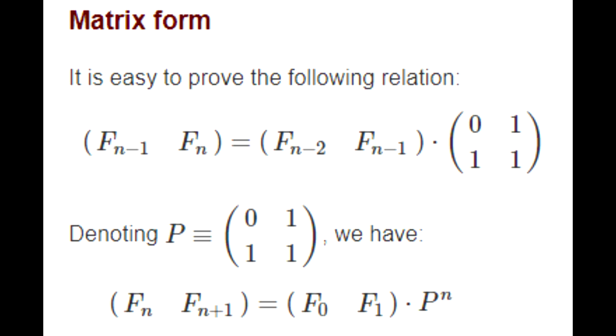Alright the next property is that if you put the previous term and the current term in a matrix, it's going to equal the two previous terms before multiplied by the matrix 0 1 1 1.